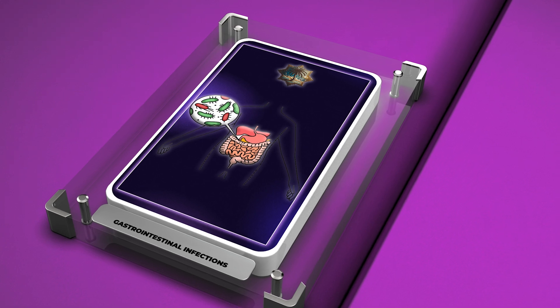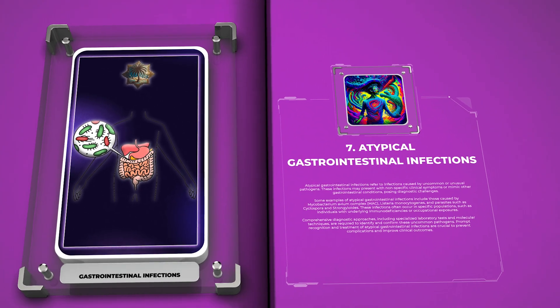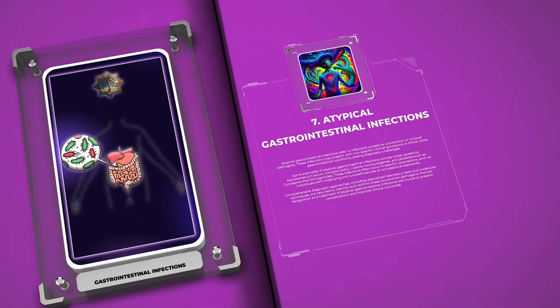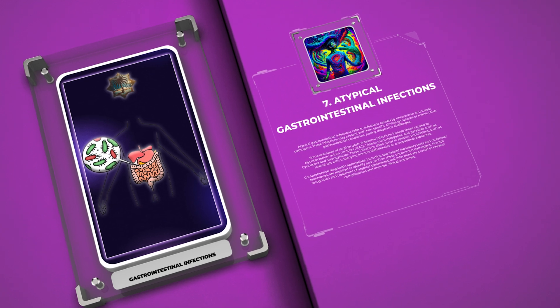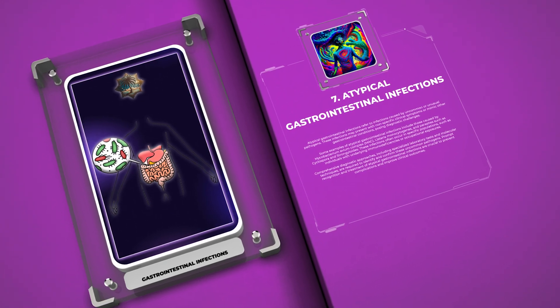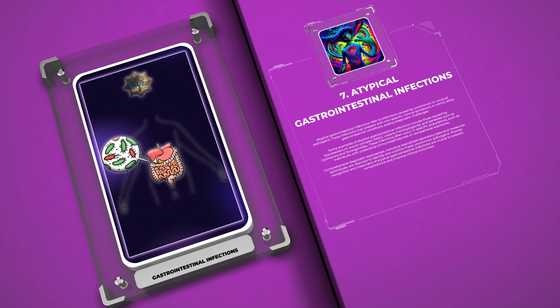Atypical gastrointestinal infections refer to infections caused by uncommon or unusual pathogens. These infections may present with nonspecific clinical symptoms or mimic other gastrointestinal conditions, posing diagnostic challenges. Examples include those caused by Mycobacterium Avium Complex (MAC), Listeria monocytogenes, and parasites such as Cyclospora and Strongyloides. These infections often occur in individuals with underlying immunodeficiencies or occupational exposures. Comprehensive diagnostic approaches, including specialized laboratory tests and molecular techniques, are required to identify these uncommon pathogens.